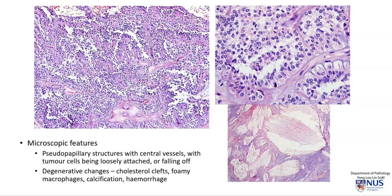This loose attachment is what causes the cystic degeneration. We are often also able to see other degenerative changes such as cholesterol clefts. These spiky shapes are actually empty spaces where cholesterol crystals once occurred and they dropped out during processing, leaving the leftover cholesterol clefts. We can also see foamy macrophages, calcifications, and hemorrhage.